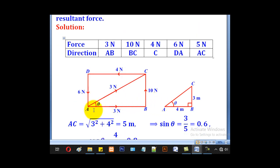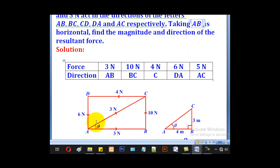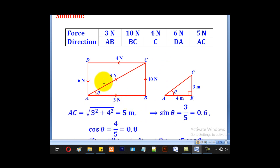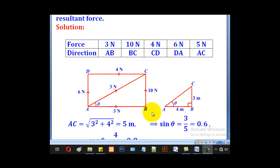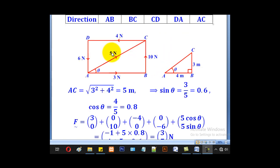After that, we shall draw our rectangle and label in an anti-clockwise direction: ABCD, starting with AB horizontal. Now we include our forces. For AB, it is 3 newtons, so put 3. BC is 10, so put 10. CD is 4, so put 4. DA is 6, so put 6. And lastly, AC is 5, so put 5 there.